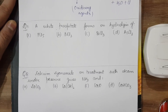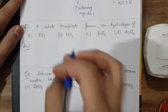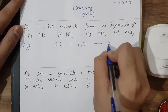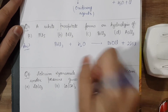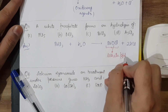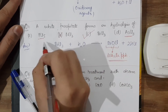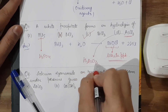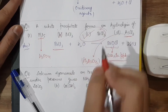The next question: a white precipitate forms on the hydrolysis of which molecule? Taking BiCl₃ first: BiCl₃ + H₂O gives BiOCl + HCl. BiOCl is a white precipitate. The other options give full hydrolysis products like H₃PO₄ or H₃AsO₃, but BiCl₃ gives BiOCl as a white ppt. Hence option C is the correct answer.